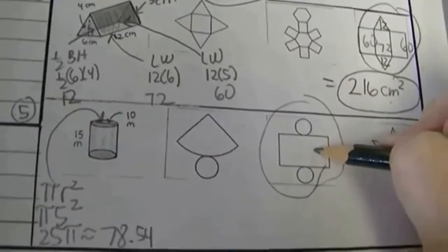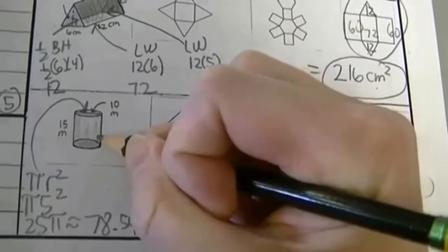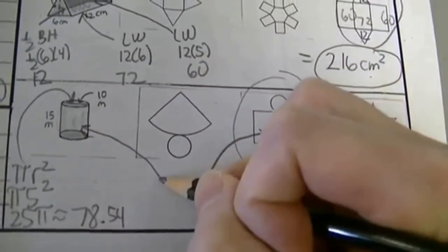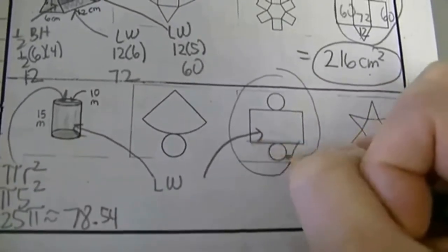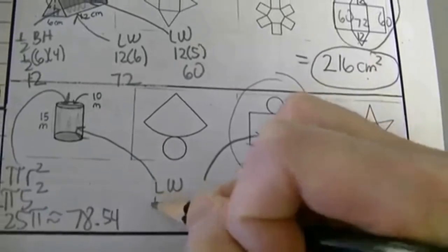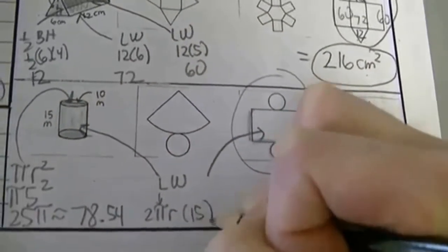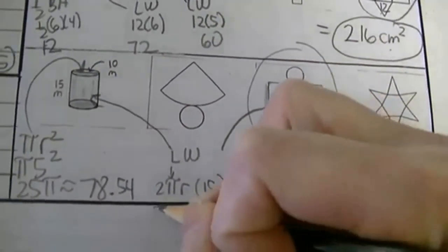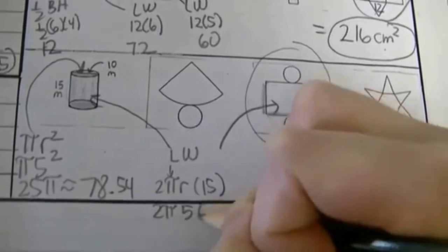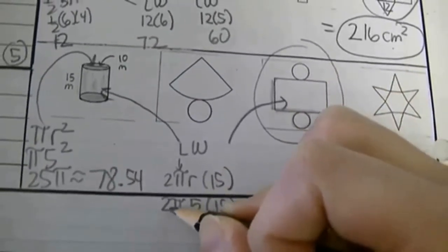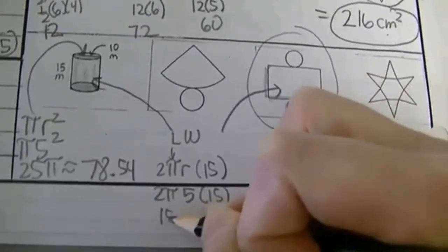The side of the cylinder is actually a rectangle. The length of it is the circumference of the circle — 2 pi r — and the width is just 15. Substituting the values: 2 times pi times 5 times 15. I can go 2 times 5 is 10, then 10 times 15 is 150 pi.